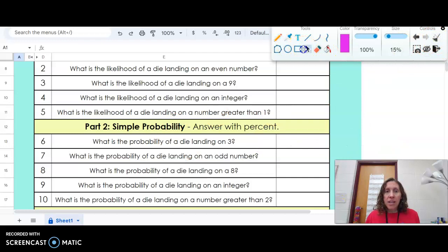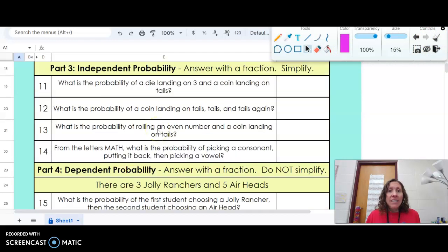Part three, independent probability. This is where you have two or more things that happen. So you need to find the fraction of this and the fraction of that, and you multiply them together.